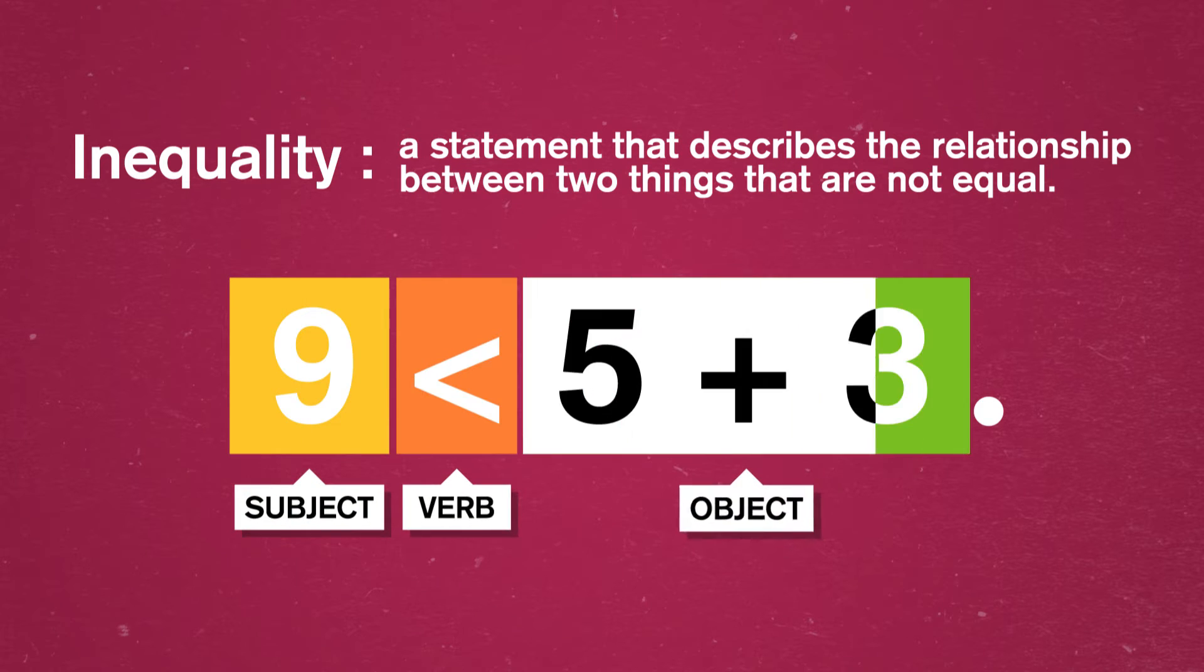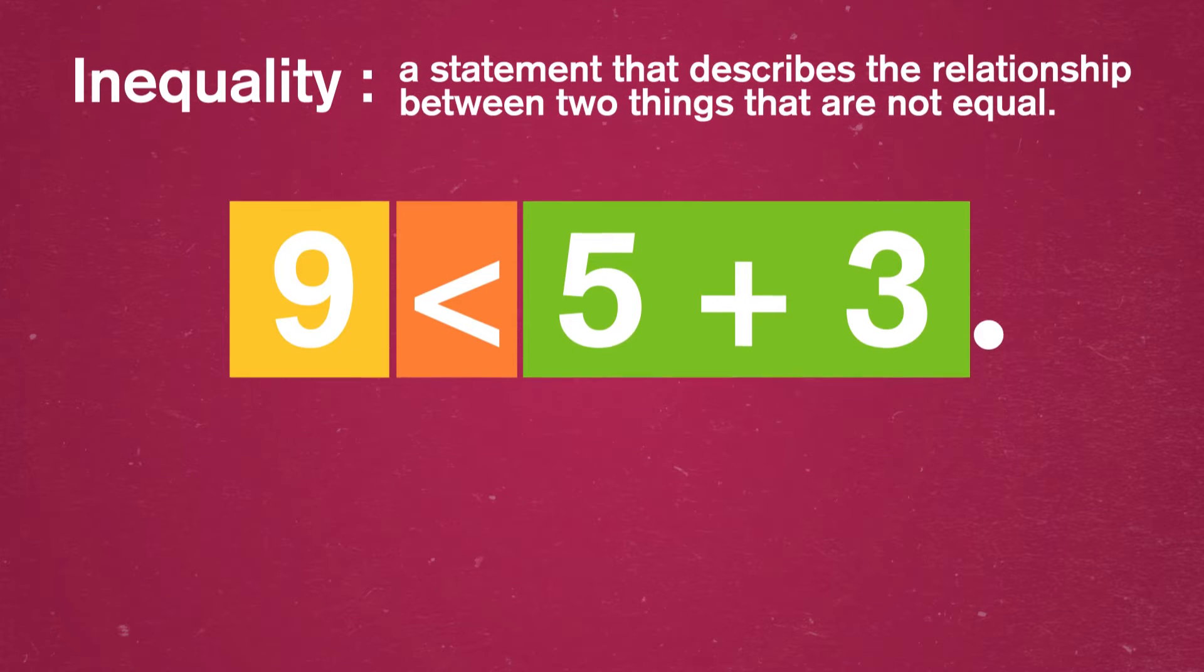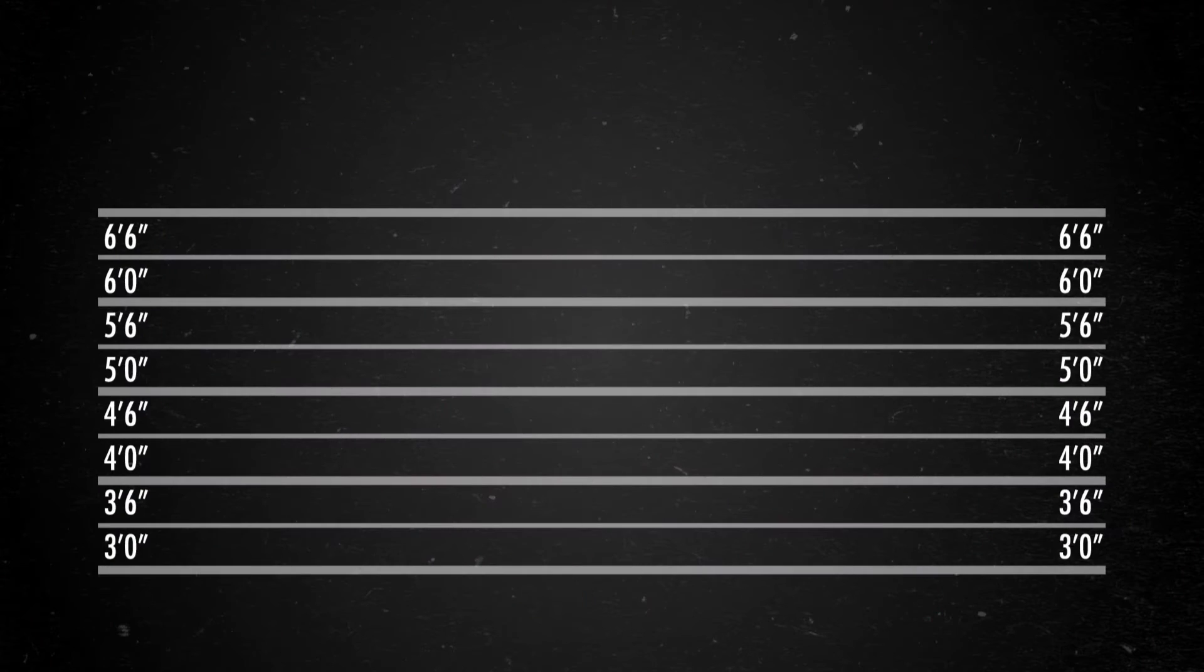Subject, verb, object. But something's fishy. It's actually not true. It's like saying pizza is a fruit. Sometimes English sentences are false. Sometimes math sentences are false, too. And sometimes it's more complicated.